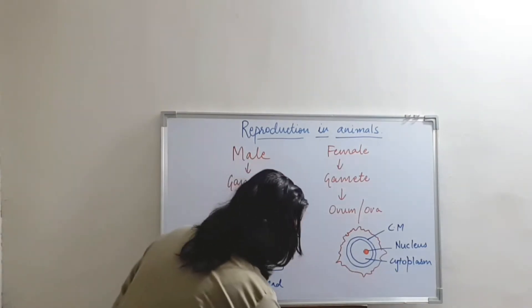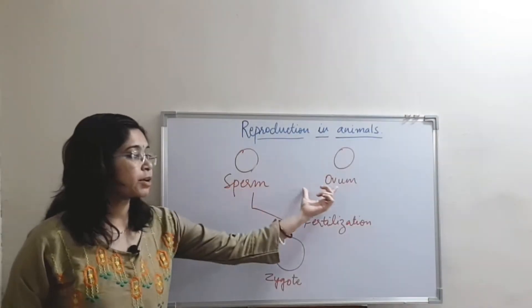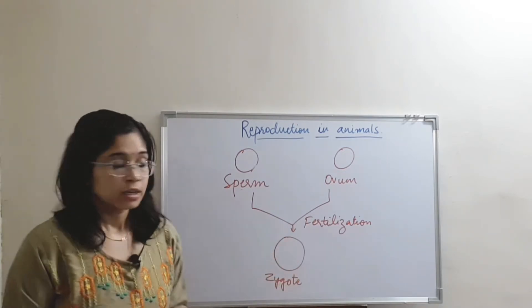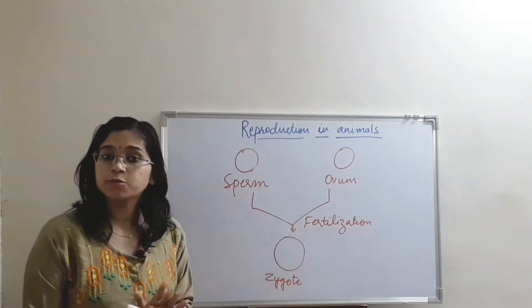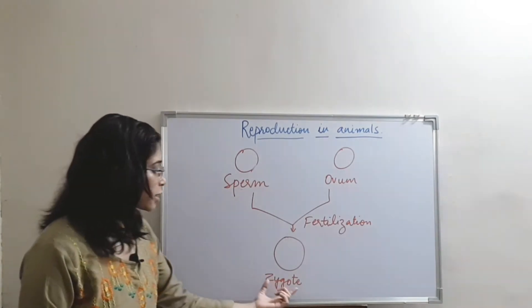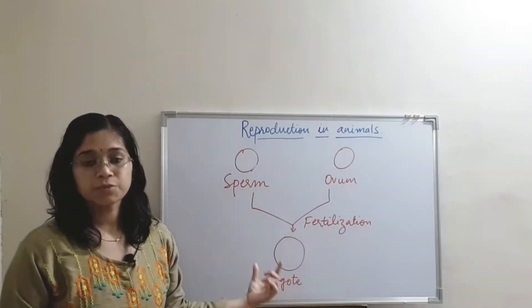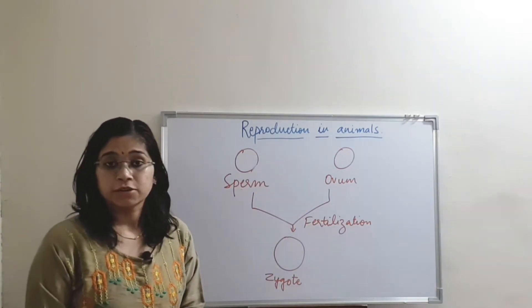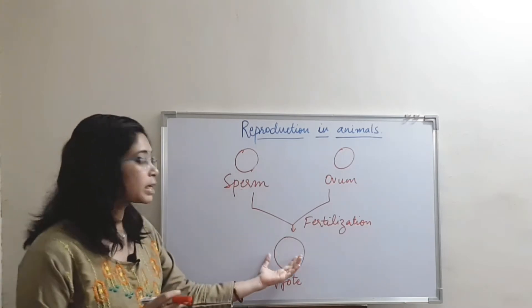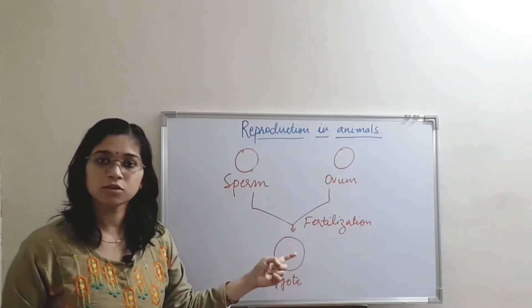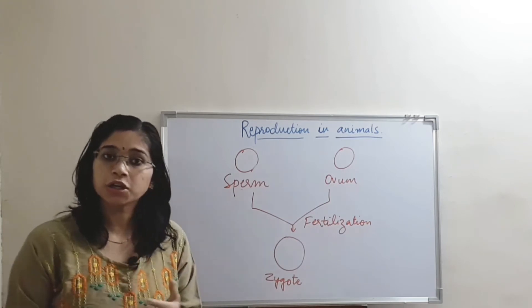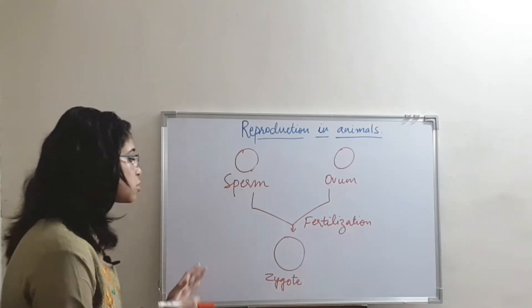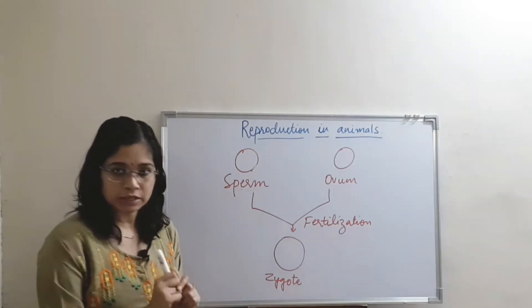The male and female gametes fuse together to form a single structure known as zygote. This process of fusion of both gametes is known as fertilization. This zygote is a single-celled structure. Sperm and ovum are both single-celled structures, but when they combine, the resulting structure is also single-celled, which divides continuously to form embryo and then fetus. We will see the basic difference between zygote, embryo and fetus.